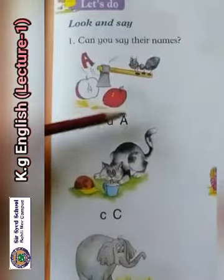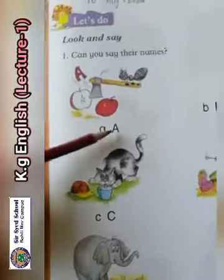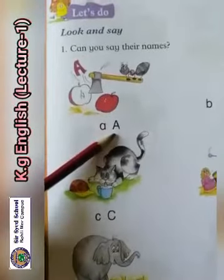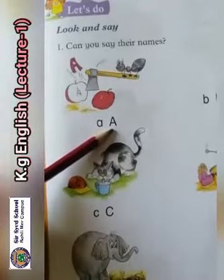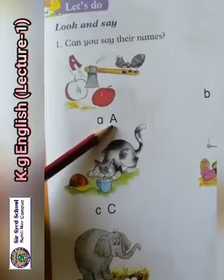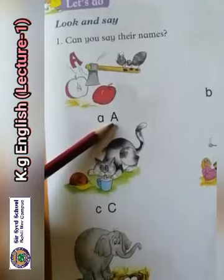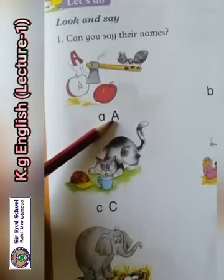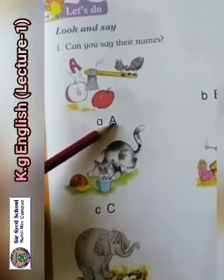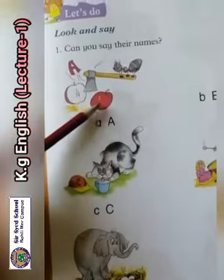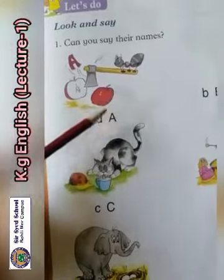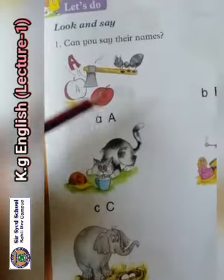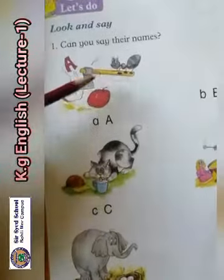The first letter is A. Capital A, small a. The sound of A is 'a'. A-a, apple. A-a, apple. A-a, ant. A-a, ant.